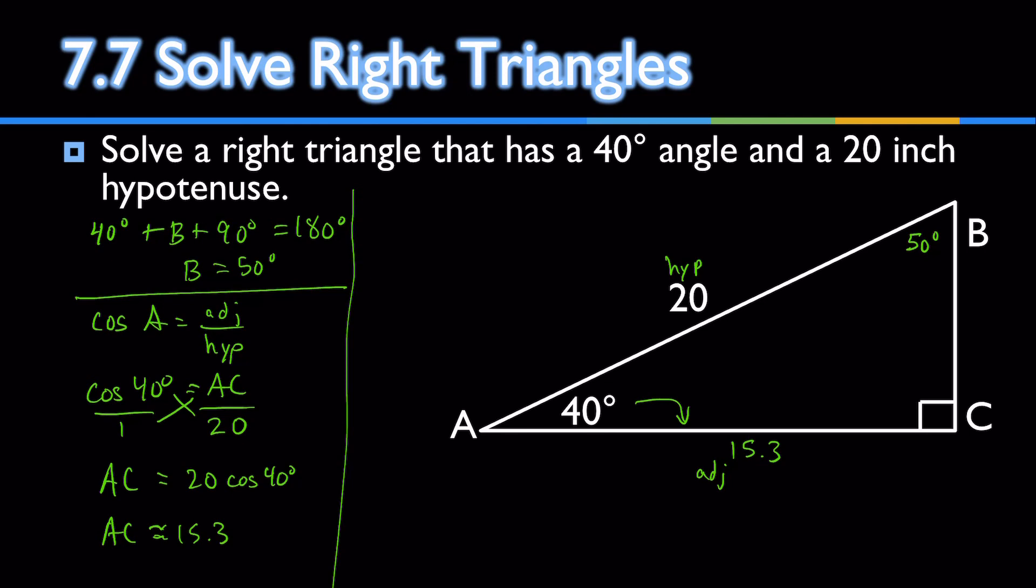Now, let's find BC. From my 40 degree angle, BC is the opposite. So, using the opposite and the hypotenuse, which I know, opposite and hypotenuse is? That's right, sine. Sine of the angle is the opposite over the hypotenuse.